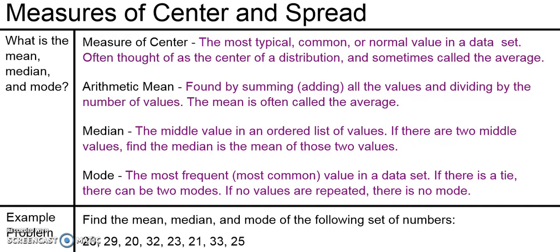The last way to find a center is called the mode. The mode is the most frequent or most common value in a data set. If there's a tie for the most frequent, there could be two modes — or three or four modes if there are three or four most common values. But if no values are repeated and they all have the same frequency, then there is no mode.